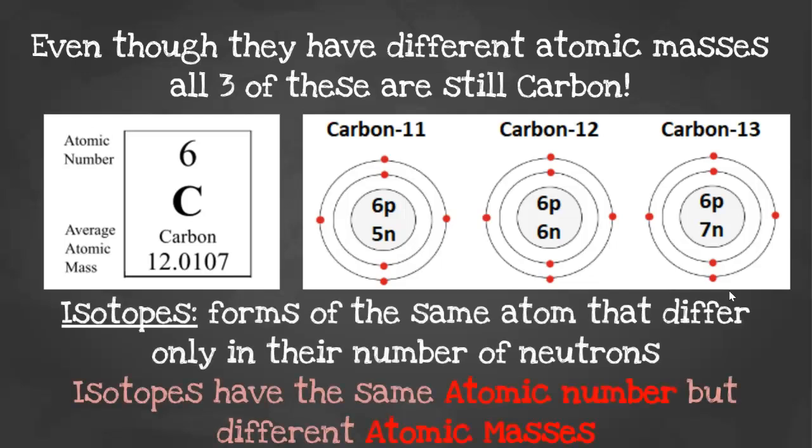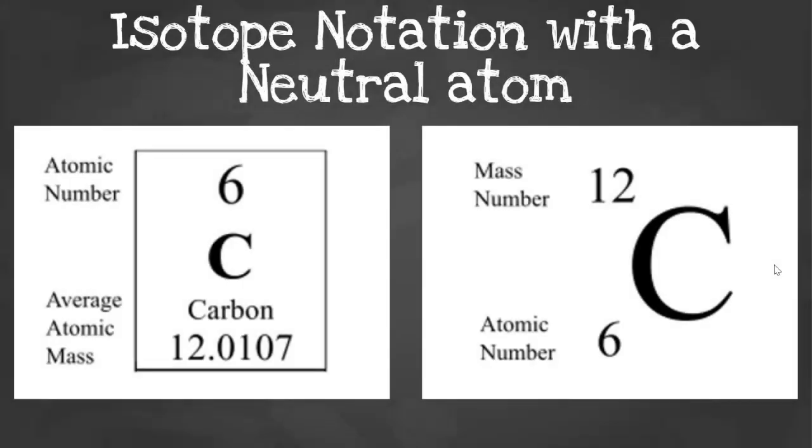The thing that changes is their number of neutrons. This is what you call an isotope. Isotopes are forms of the same atom that differ only in their number of neutrons. That means isotopes have the same atomic number, meaning same number of protons, but different atomic masses. For example, the Bohr model to the left is carbon 11, because it has five neutrons. The middle carbon is carbon 12, it has six neutrons. And the right Bohr model is carbon 13, it has seven neutrons. So all still depicting carbon, same number of protons, same number of electrons, just different number of neutrons. Isotope notation is fairly simple. It just takes the information you know and flips where the atomic number and atomic mass are. You put your chemical symbol, put the mass number at the top and the atomic number at the bottom.